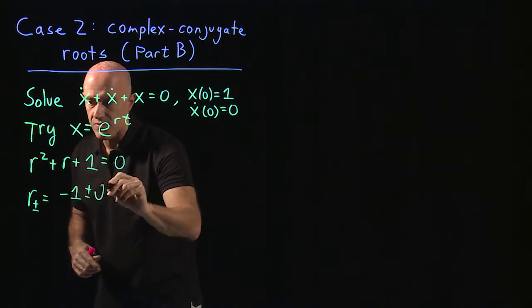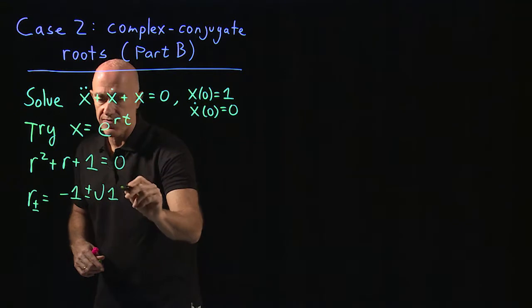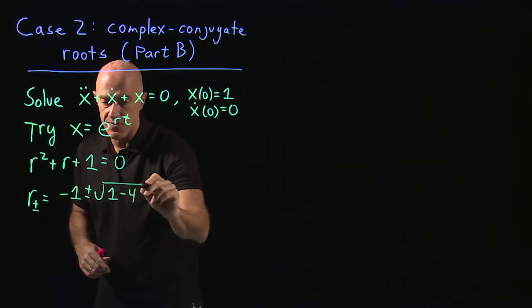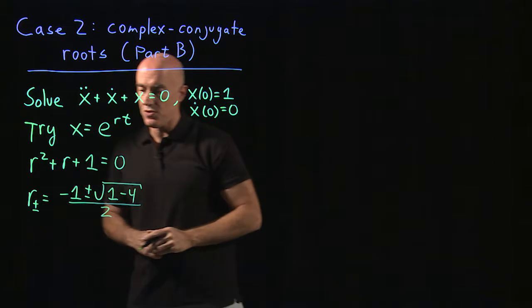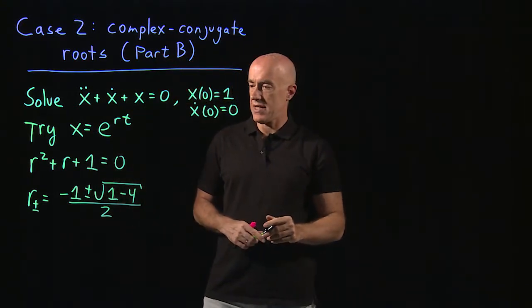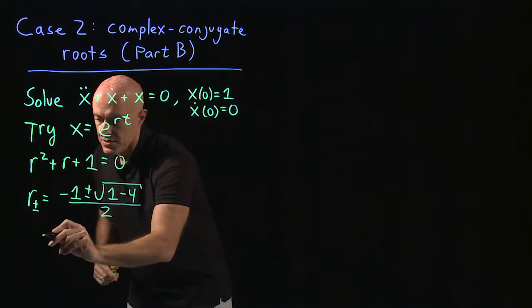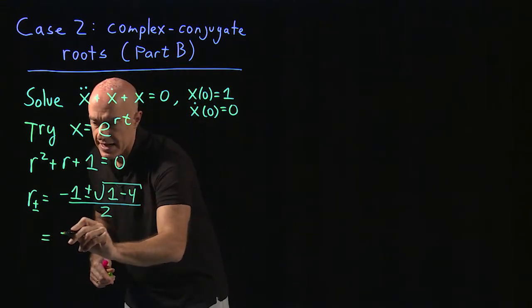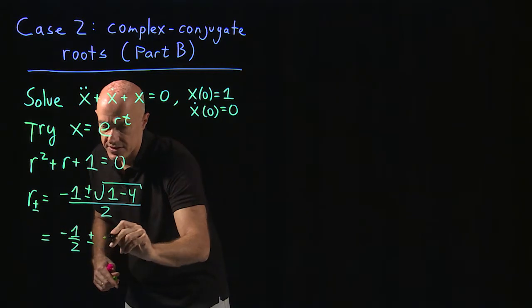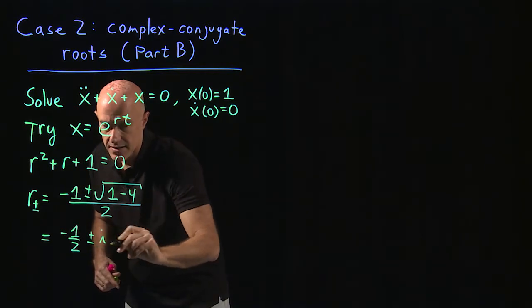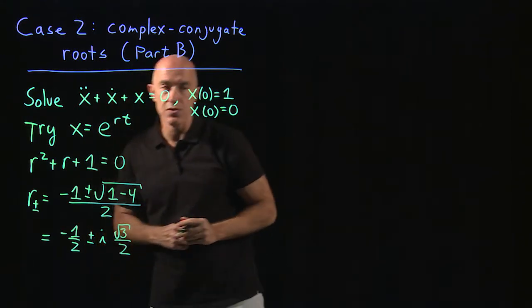plus or minus the square root of b squared — one — minus 4ac, which is minus four, over 2a, which is two. And we notice that those are complex numbers. So this is minus one half plus or minus i times root 3 divided by 2.